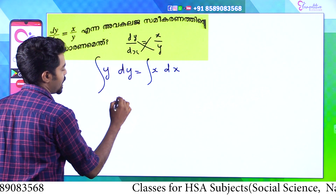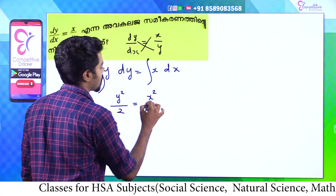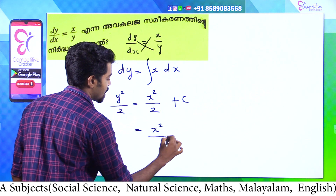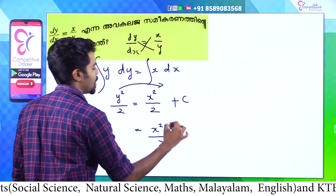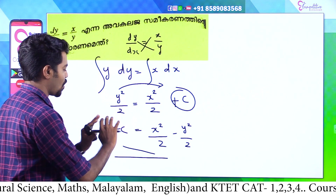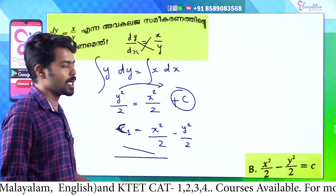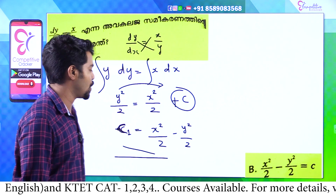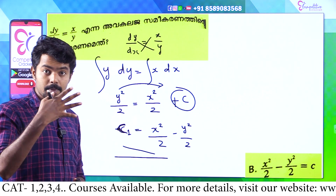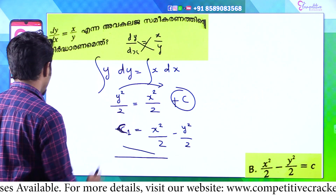Y is the integration. X is the integration. Plus c. Now let's take the answer. x² / 2 plus y² / 2 — that is minus y² / 2. This constant term is minus c. We have to take the minus. So x² / 2 minus y² / 2 is equal to c. Is it clear? It's very easy. If you have any questions, we will answer that.